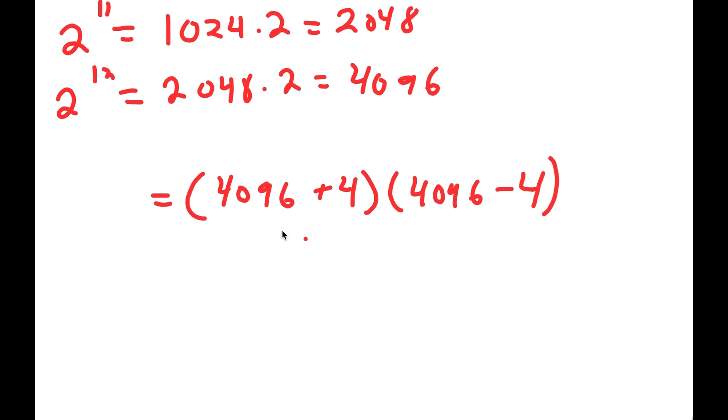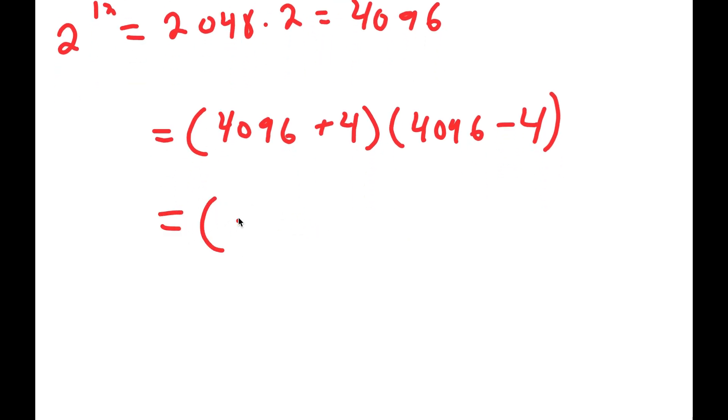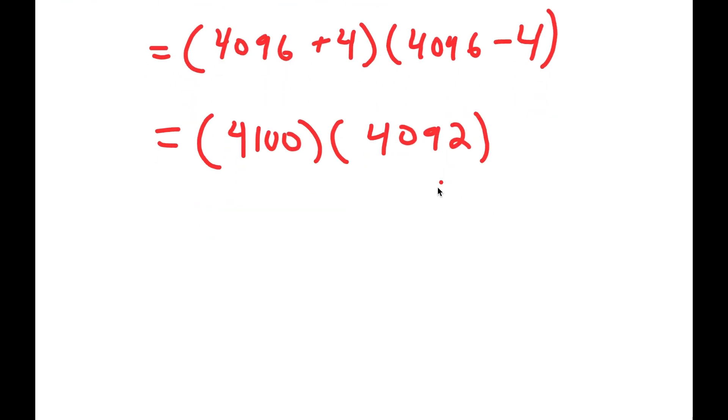So I get 4096 plus 4 times 4096 minus 4. Now, from here, 4096 plus 4, that's equal to 4100, and 4096 minus 4 is equal to 4092. So I get 4100 times 4092.